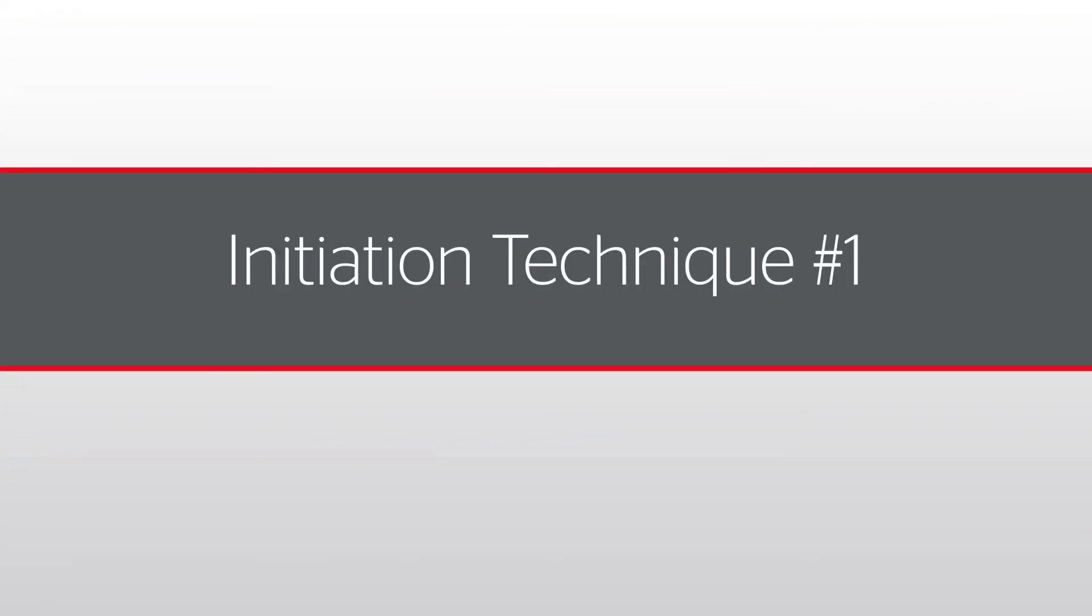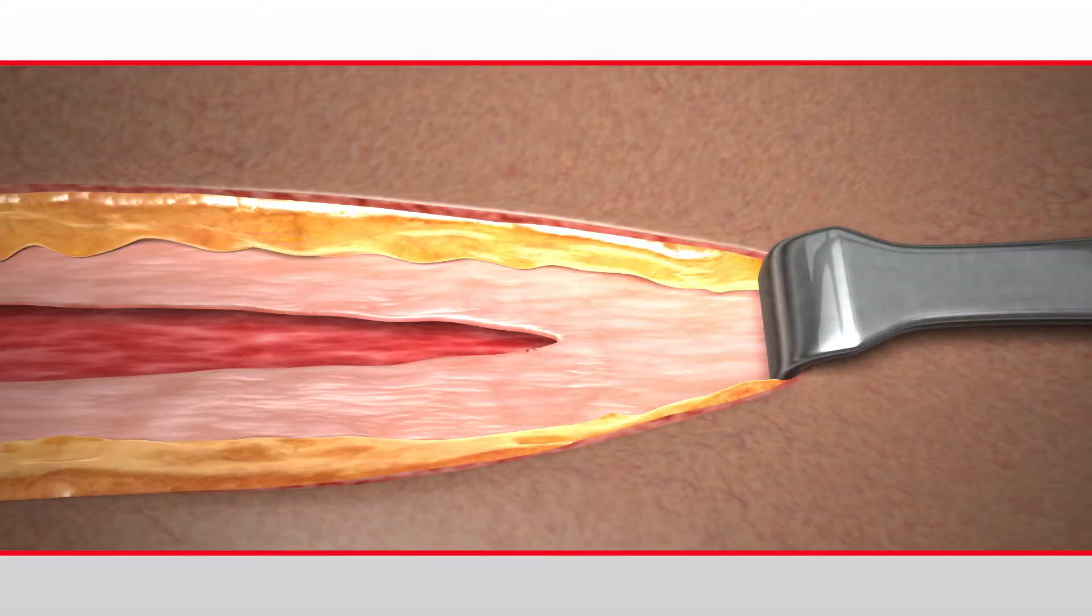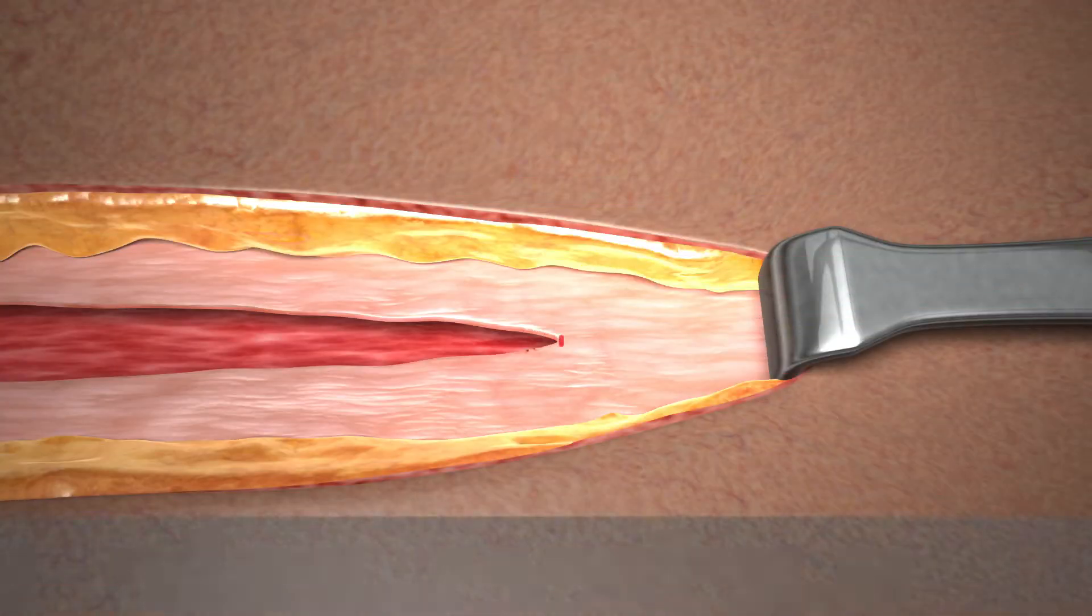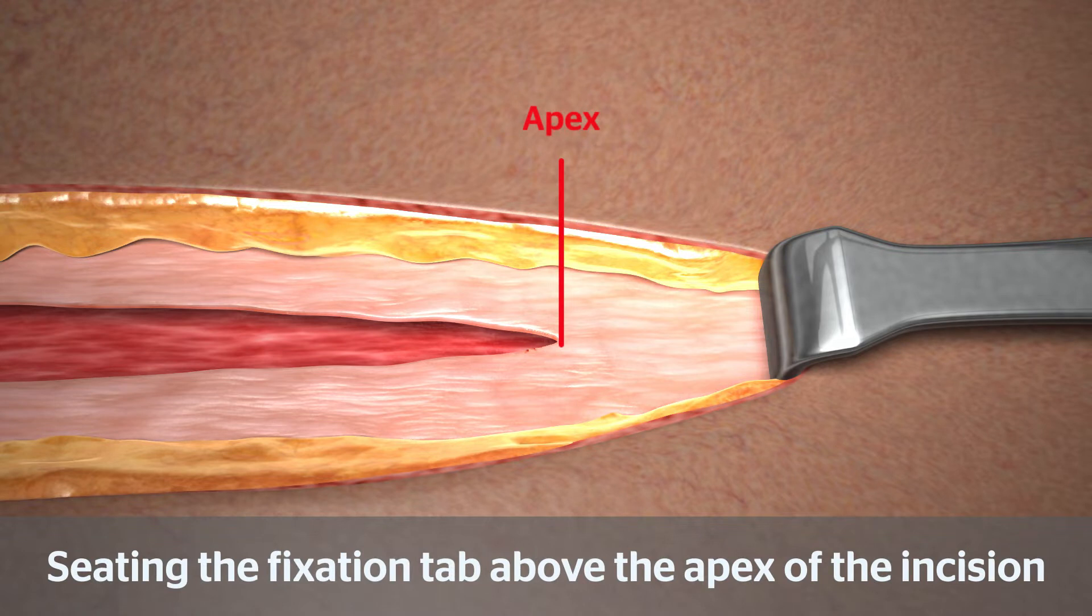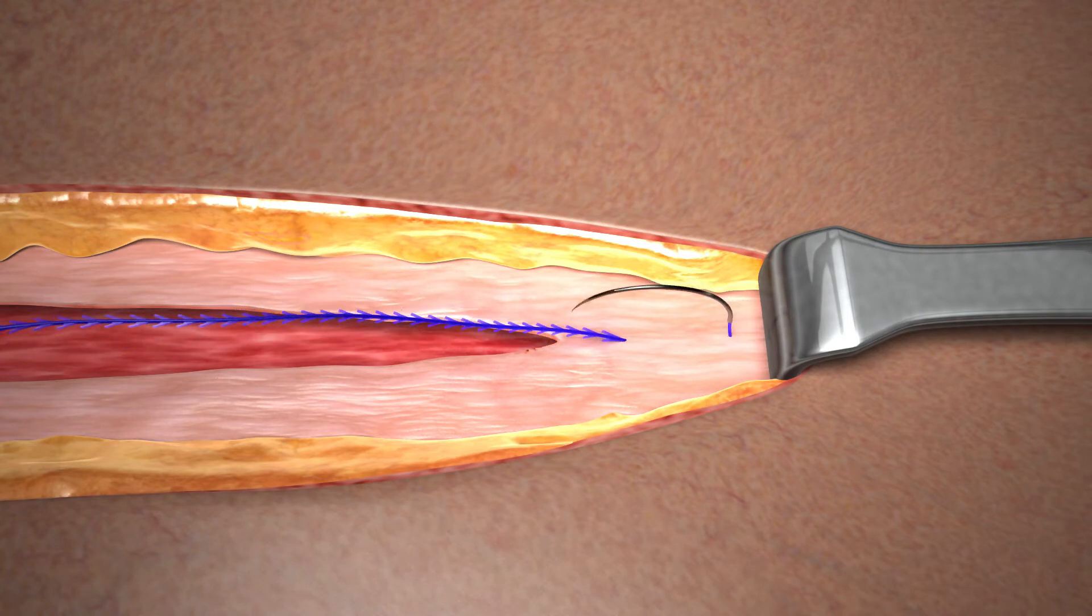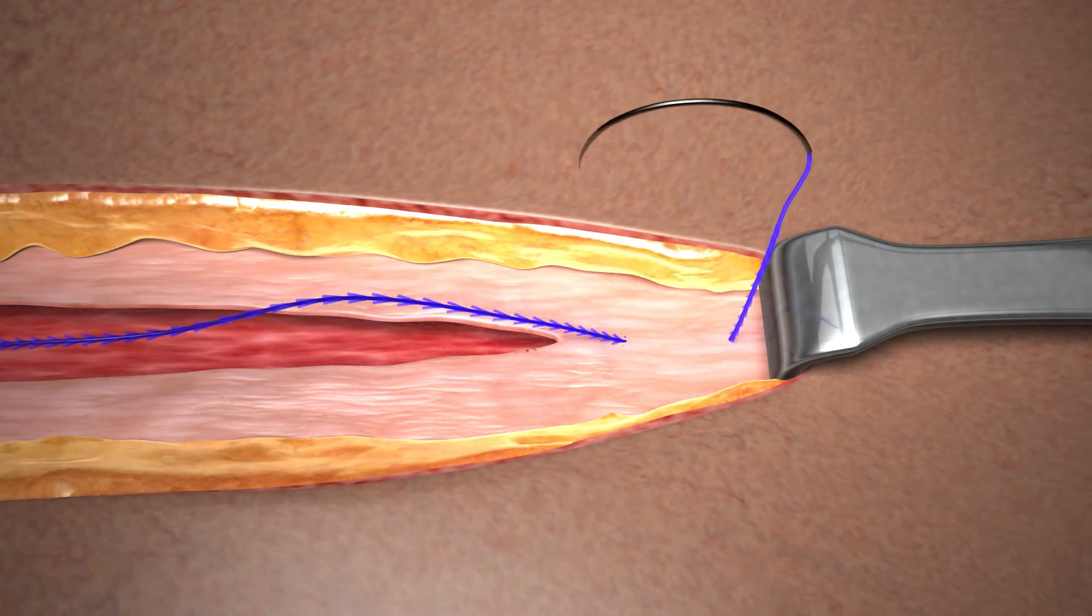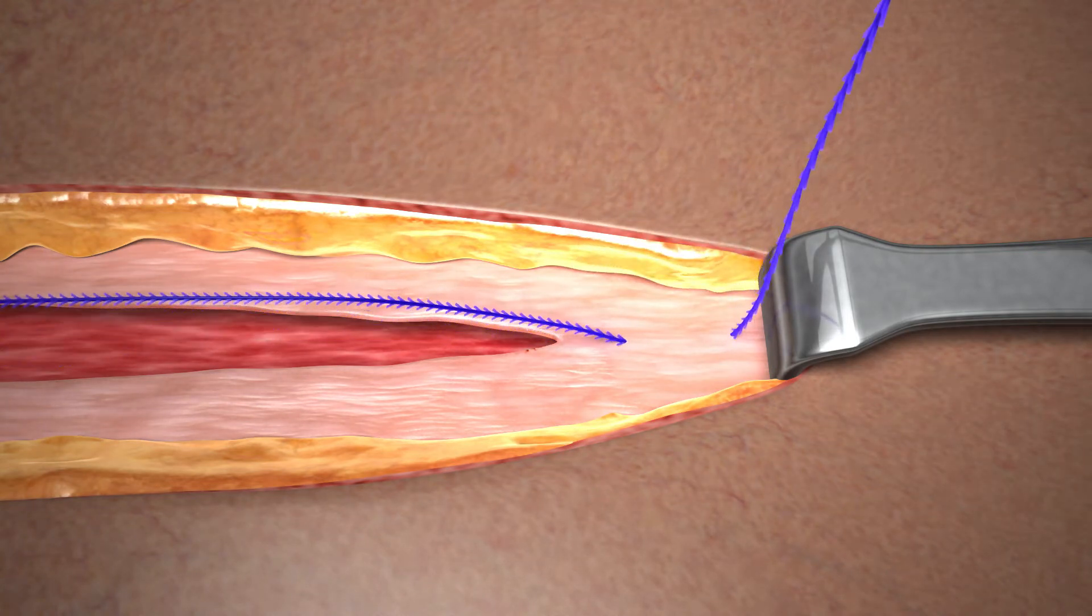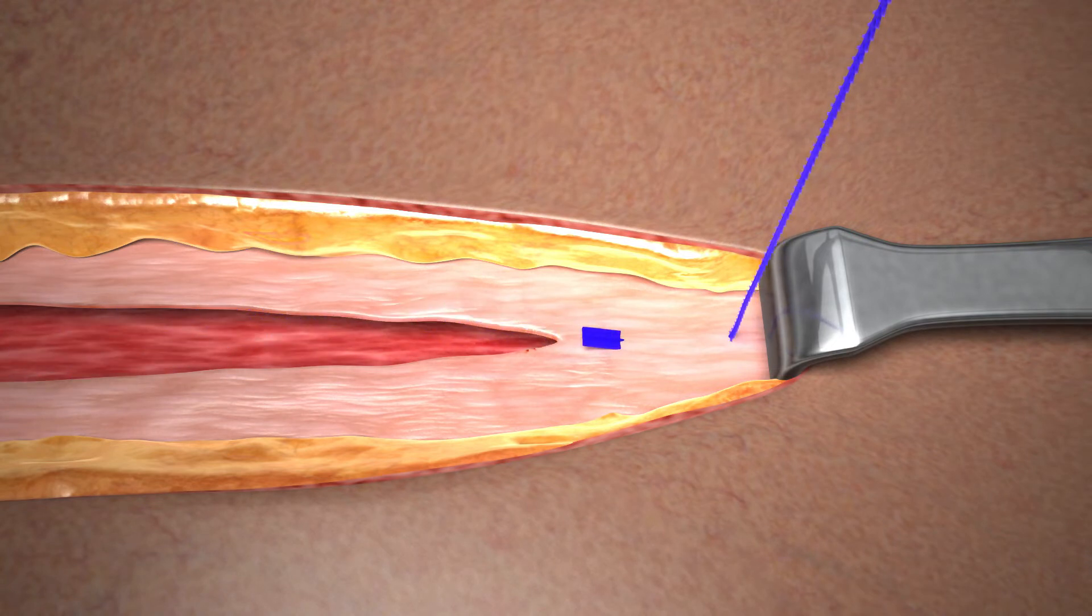Let's take a look at the first initiation technique. In the first technique the fixation tab is seated above the apex of the incision. To begin take the first pass in intact tissue directly above the apex in a direction away from the incision. Pull the device through the tissue to gently seat the fixation tab. The fixation tab should be seated above the tissue plane so that it remains visible. Do not exert additional force on the fixation tab or device.